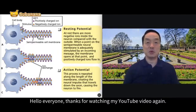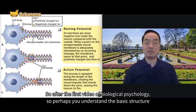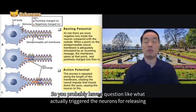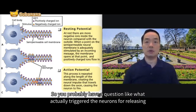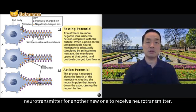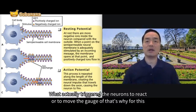Hello everyone. Thank you for watching my YouTube video again. After the first video about biological psychology, you understand the basic structure of neurons. But you probably have a question like: what actually triggers the neurons for releasing neurotransmitters for another neuron to receive? What actually triggers the neurons to react or to move?